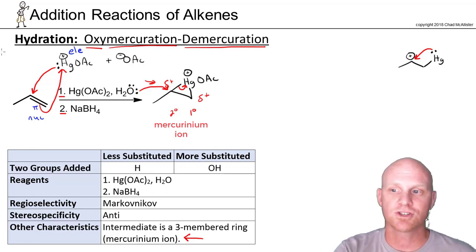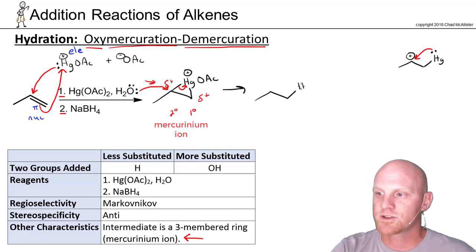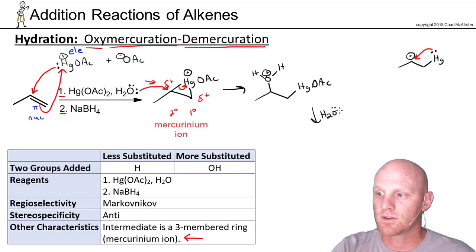When you attack a three-membered ring, you've always got to attack it from what we say the backside, essentially exactly analogous to a backside attack in an SN2 reaction. We're going to attach our HgOAc on one side and our water on the other. As you might recall, you never want to end a step with an oxygen with three bonds and a plus charge. That thing is a very good acid. So you're going to have another water molecule come along—or whatever your solvent is, and water's our solvent in this case—and you'll do a proton transfer and deprotonate it.